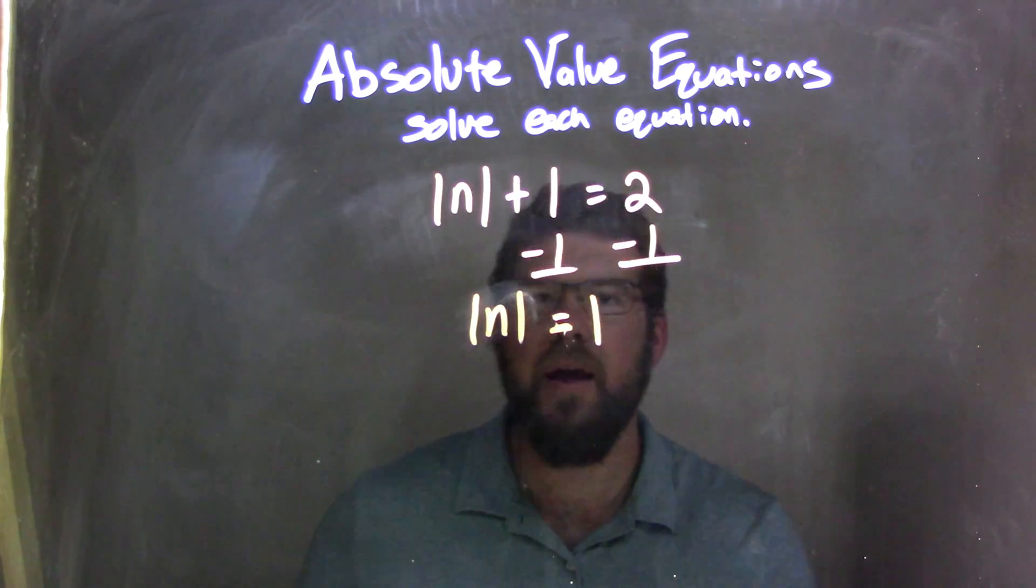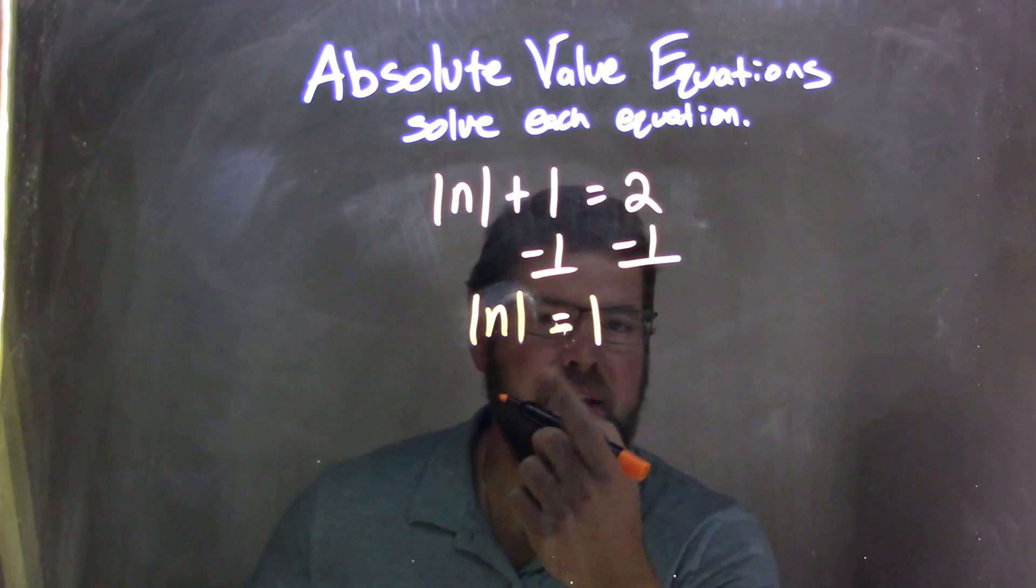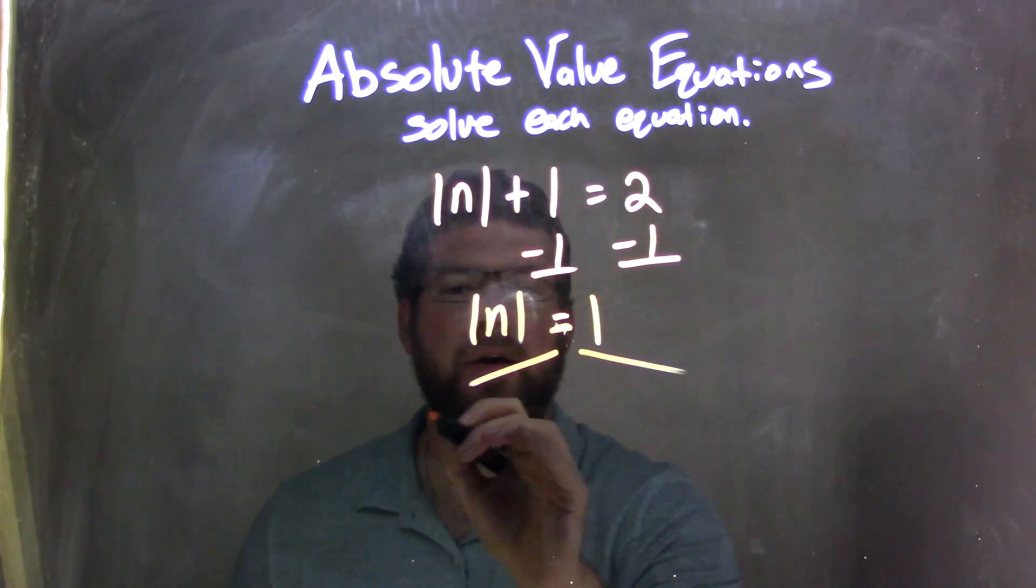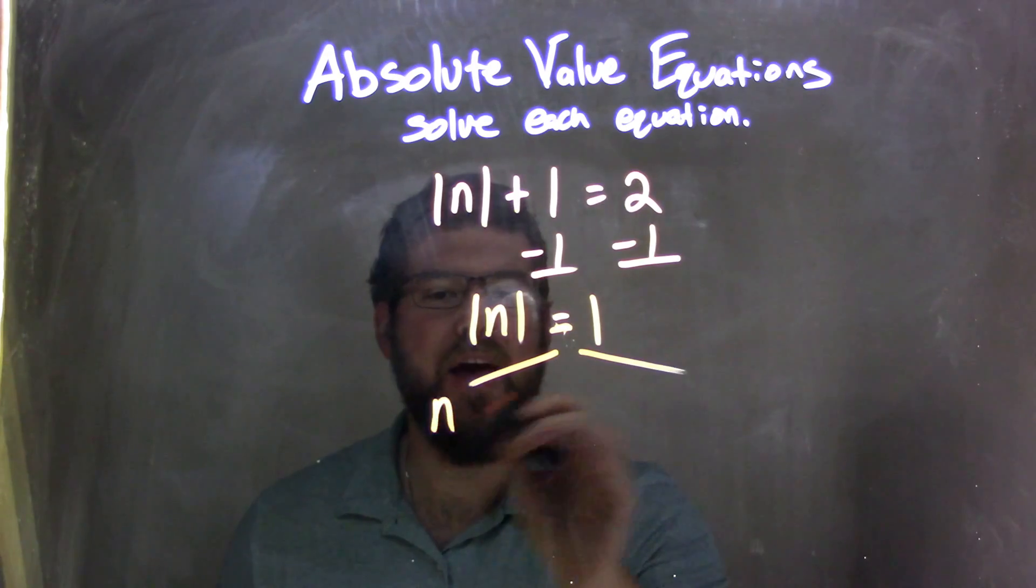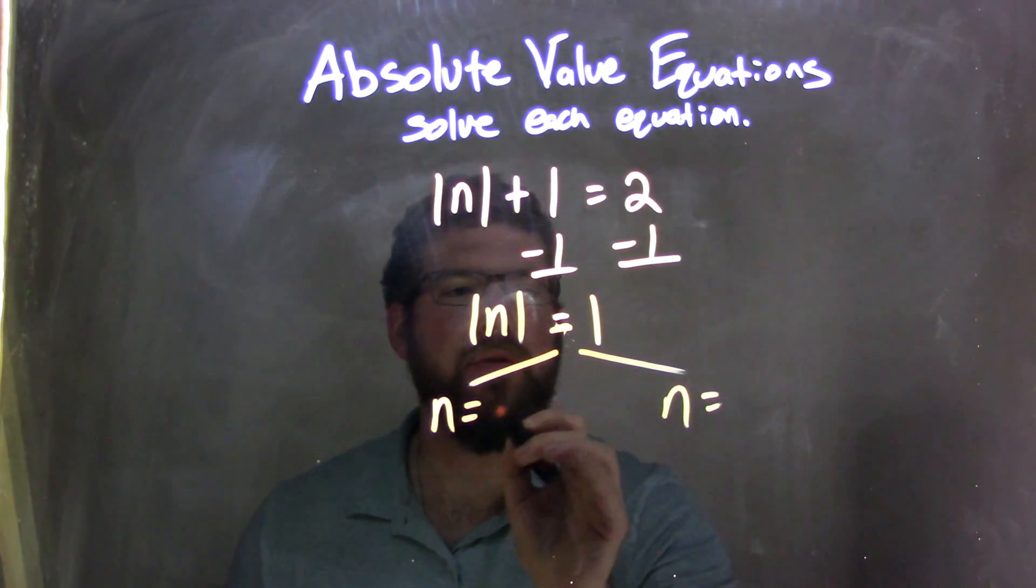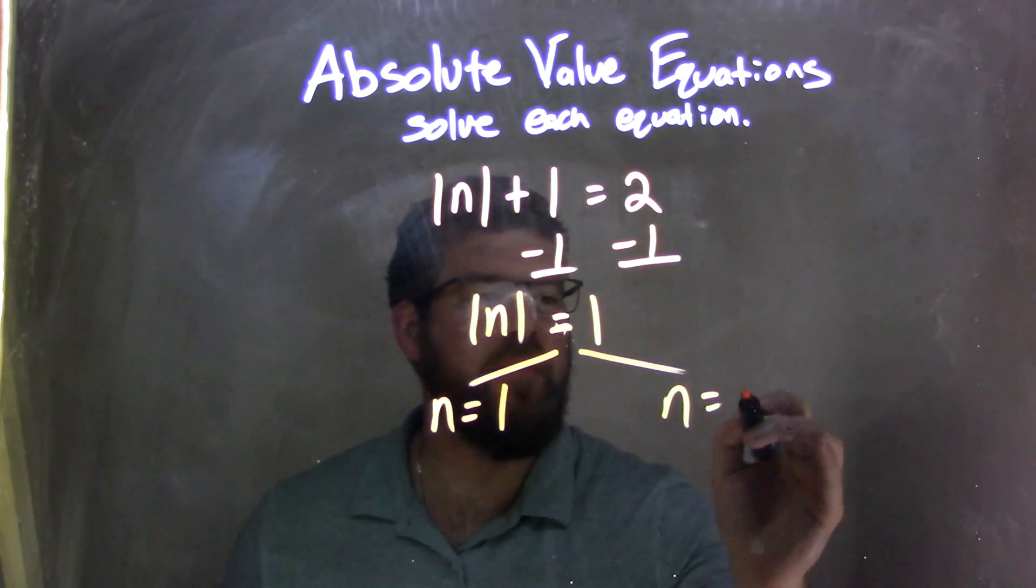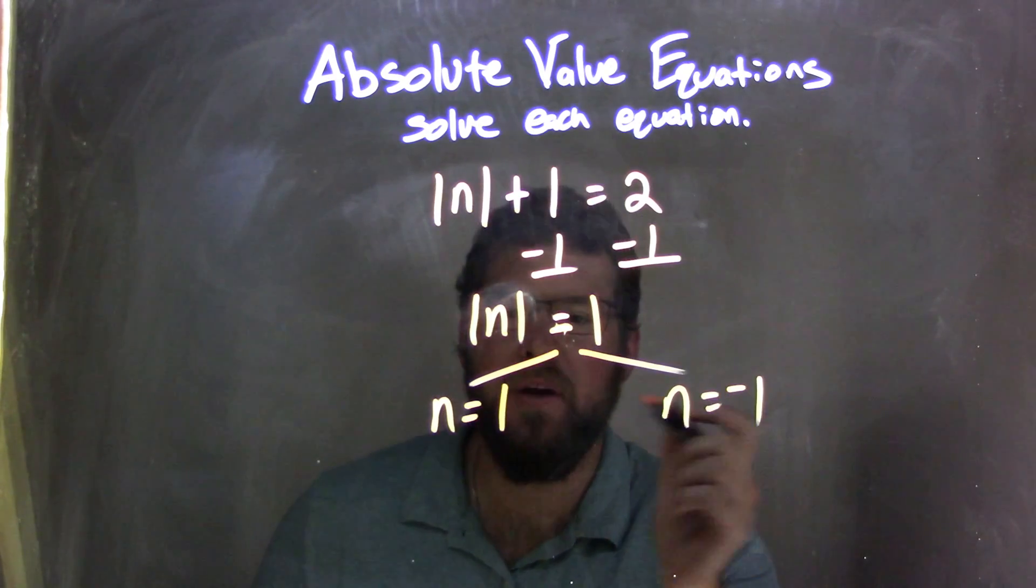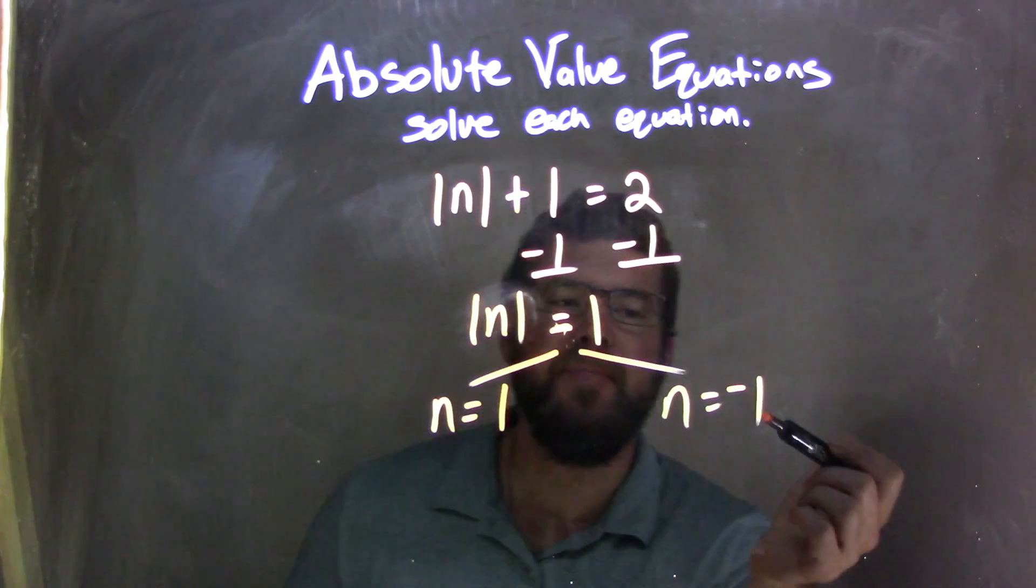So then, once we have the absolute value isolated, we can break this apart into two equations. The absolute value of n turns into just n equals—I'll take that number and make it positive and negative, so positive 1 and negative 1, leaving me with n equals 1, n equals negative 1.